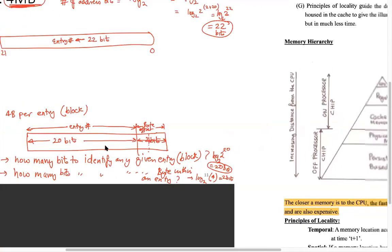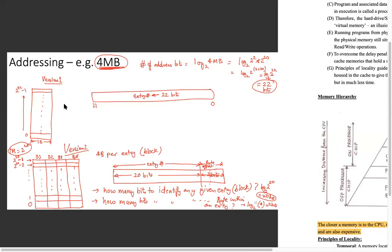Let's look at an example: we have a 4 MB memory. How many address bits do you need for 4 MB? M is 2^20 and 4 is 2^2, so you need 22 address bits. Now there are two ways to organize this memory.